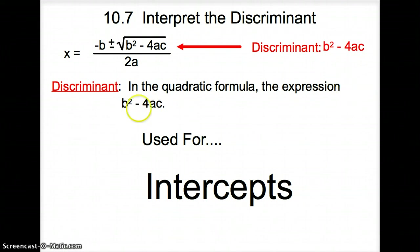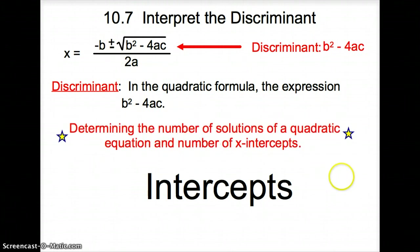So the discriminant is from the quadratic formula, b² minus 4ac. What is it used for? It determines the number of solutions of a quadratic equation, and it also gives you the number of x-intercepts, which is also the solutions.